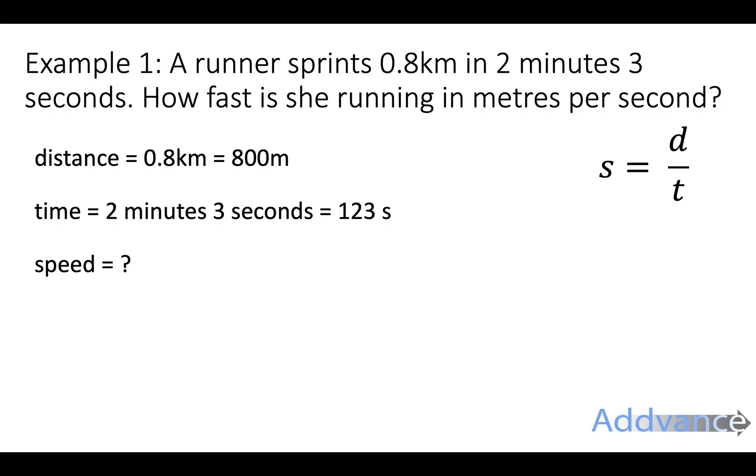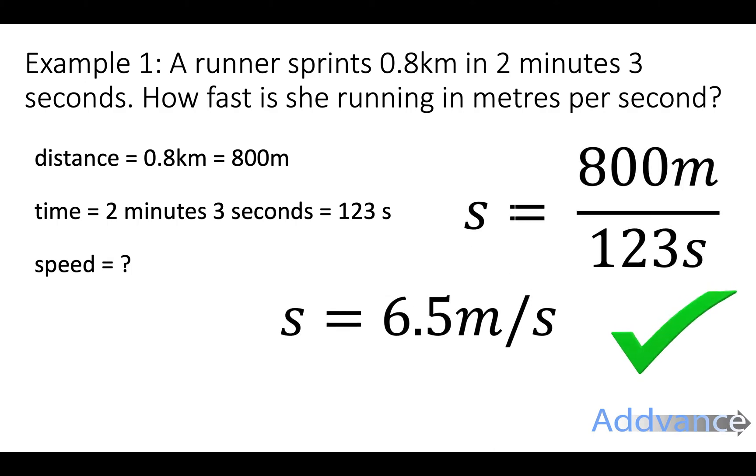Now the speed, we're going to do that by doing the distance divided by time. 800 divided by 123, which is about 6.5 meters per second. And that's the final answer.